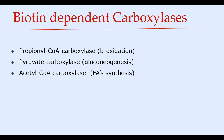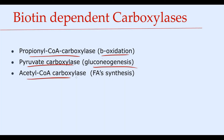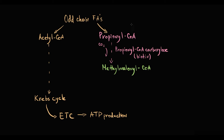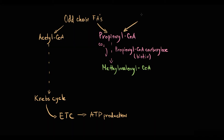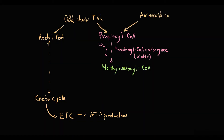It is important to know that propionyl-CoA carboxylase is one of three carboxylases that use biotin as a coenzyme, same as pyruvate carboxylase in gluconeogenesis and acetyl-CoA carboxylase in fatty acid synthesis. Also very important: propionyl-CoA is formed during catabolism of four amino acids.